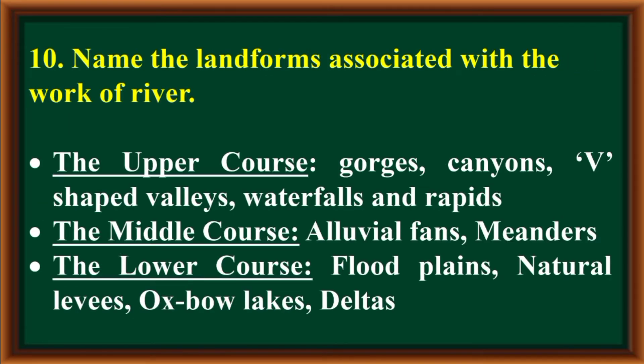Name the landforms associated with the work of a river. The upper course: gorges, canyons, V-shaped valleys, waterfalls and rapids. The middle course: alluvial fans, meanders. The lower course: flood plains, natural levees, oxbow lakes, and deltas.